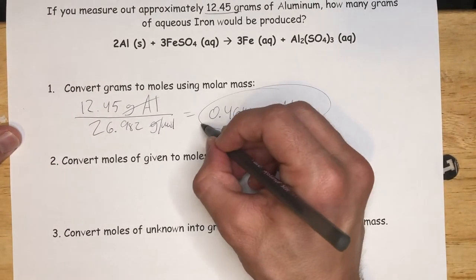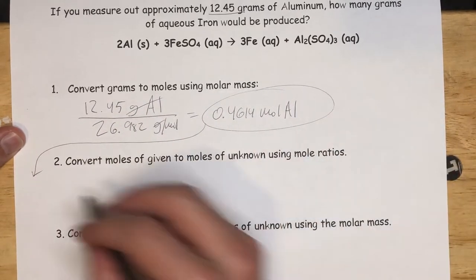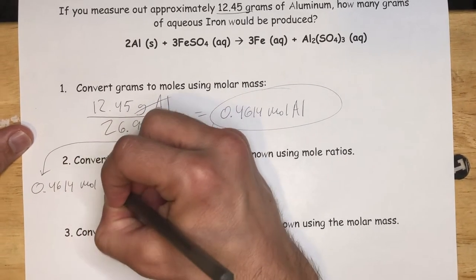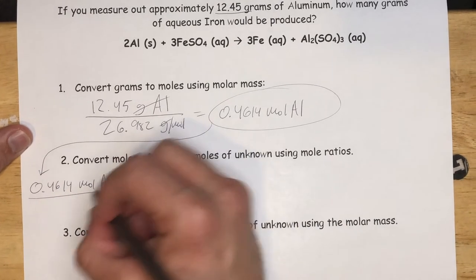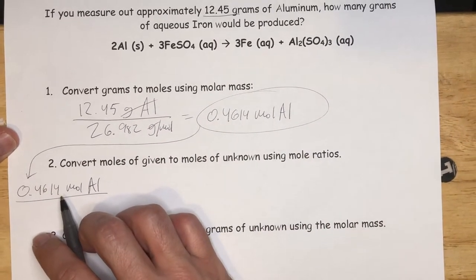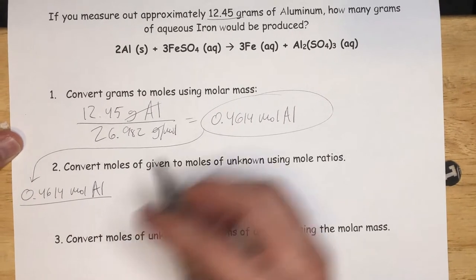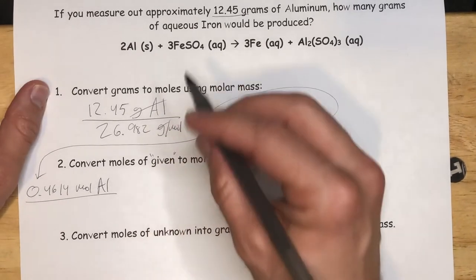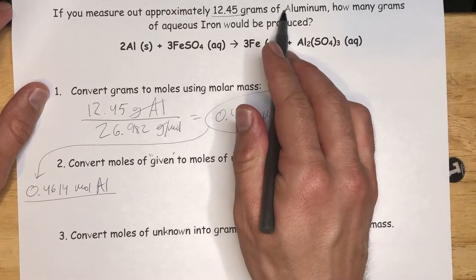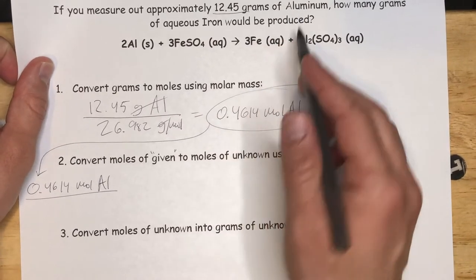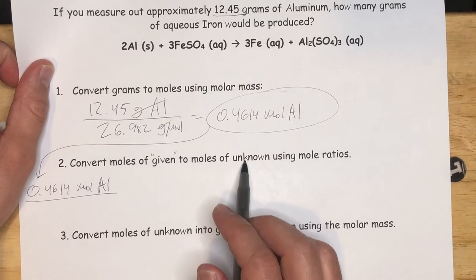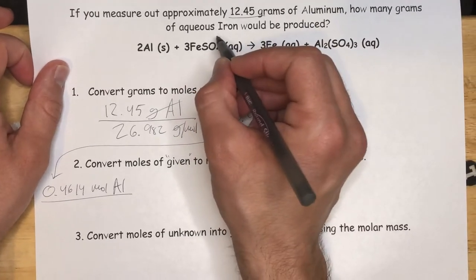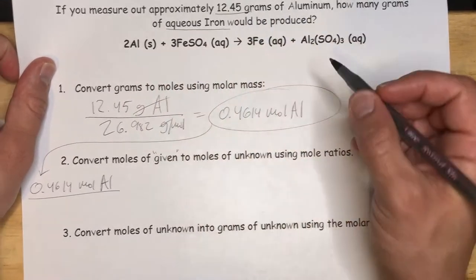We're then going to take this and we're going to use this in step two, 0.4614. Now what we're going to do with this is we're converting moles of given. What that means is what we're given in the question, what we're given in the lab, what we're measuring. What we're given in the question is 12.145 grams of aluminum. So we're given aluminum. So we're going to take moles of given and convert it to moles of unknown. Unknown is what the question asks. It asks us how many grams of aqueous iron would be produced.